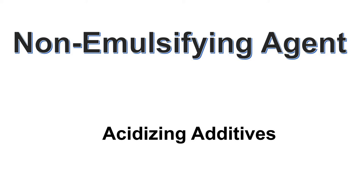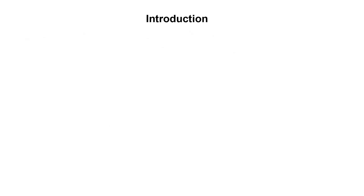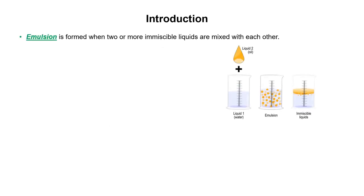Hello, in this tutorial we will discuss non-emulsifying agents. We will start with an introduction and the definition of what an emulsion is. Emulsion is formed when two or more immiscible liquids are mixed with each other. As we can see in this diagram, there are two liquids — the first is water and the second is oil. When these two immiscible liquids come in contact with each other, emulsion is formed.